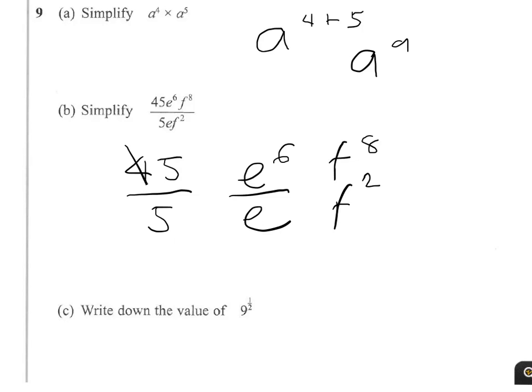So 45 over 5 gives me 9. E6, so I'll put that here, 9. E6 over e, well that's e6 over e to the 1, and we subtract under division. So 6 subtract 1 is 5, so that's 9e to the 5.